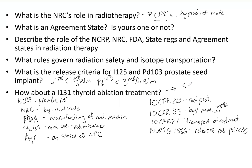I-131 thyroid ablation release criteria is less than seven mR per hour at one meter. Notice that as the half-life decreases, the release level increases — because the faster these isotopes give off energy and exposure, the stricter the release threshold needs to be, as you may receive more exposure in a shorter time. Best of luck studying — you guys can do it!